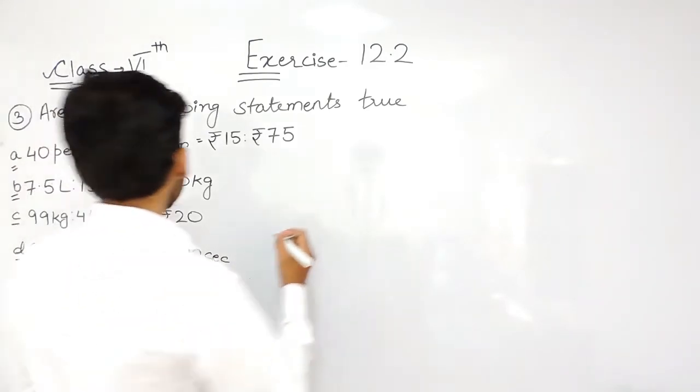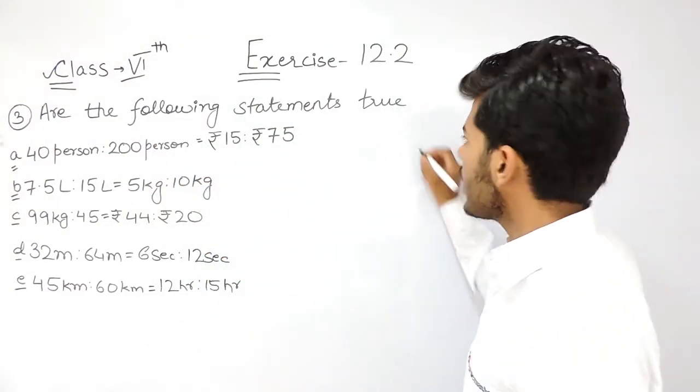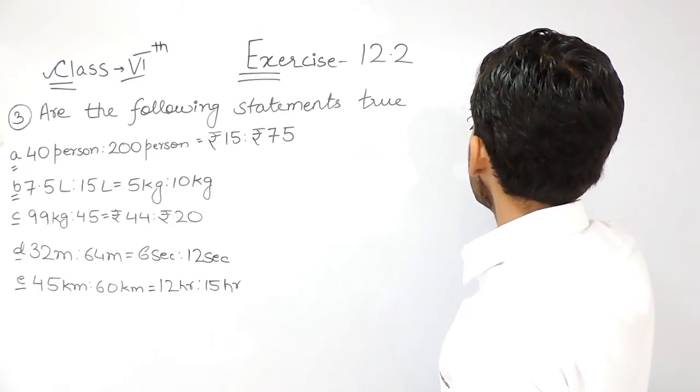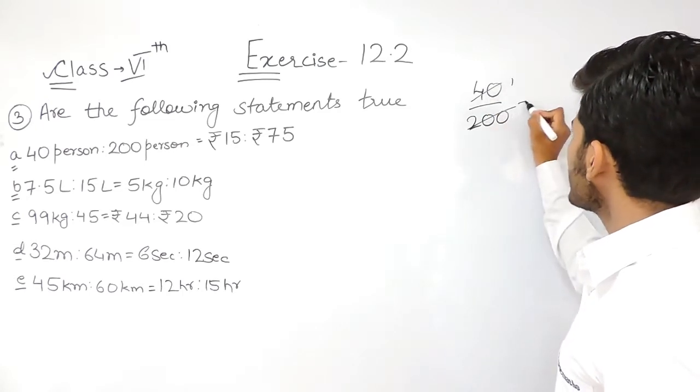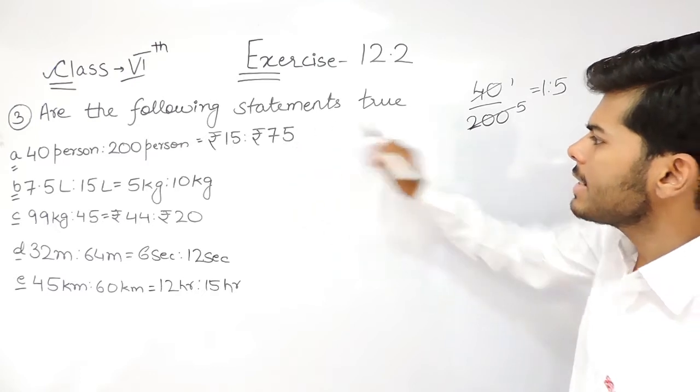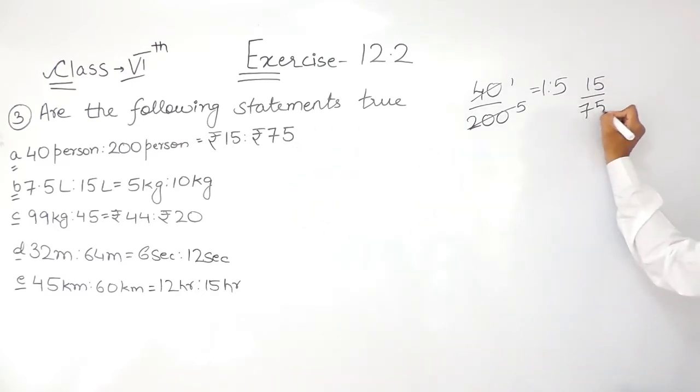We will do the same thing. It says that 40 person ratio 200 person. So the ratio will be 40 upon 200, that is 4 times 1, 5 times 4, that is 1 ratio 5. And here it is 15 ratio 75. So 15, 1 times 15, 5 times 15, that is again 1 ratio 5. That means statement 1 is true.